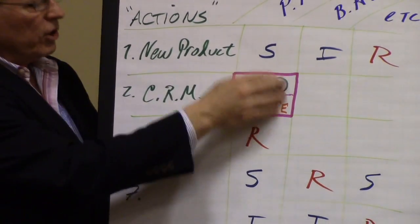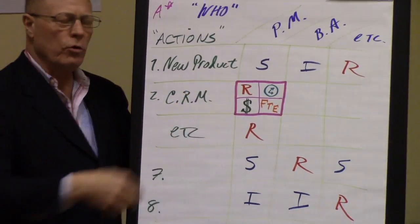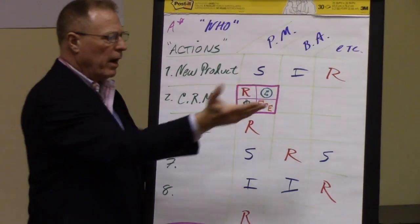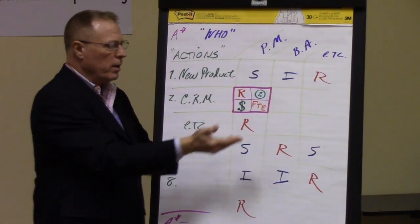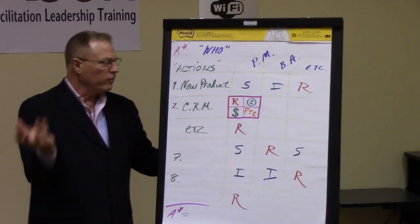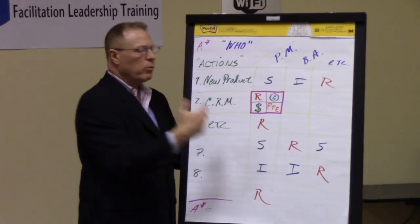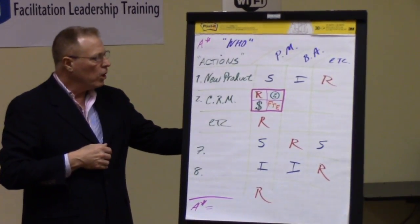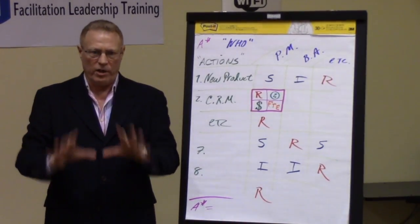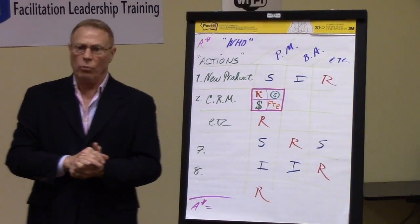You can imagine leaving a room with all of your actions assigned in terms of who's responsible, who's supporting it, who needs to be informed about it, approximately when it will be done, approximately how much money is required, and approximately how much labor is involved. You have, in essence, what is called a Gantt chart. It's a project plan, and from this moment forward we can actually get to work.